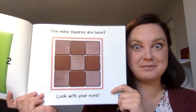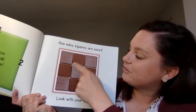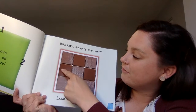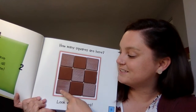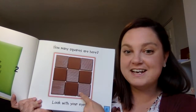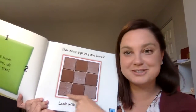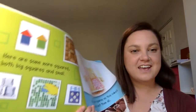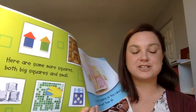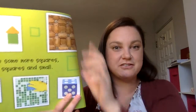One, two, three, four, five, six, seven, eight, nine inside, and then ten — the big square on the outside. They all make up together. Here are more squares, both big squares and small. Look at all these different squares.